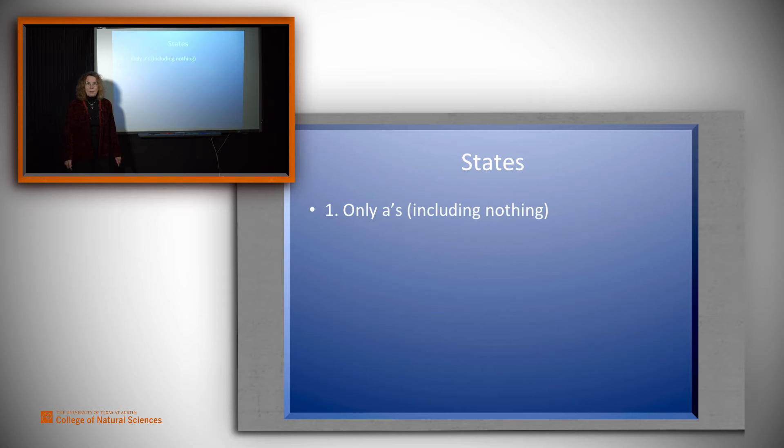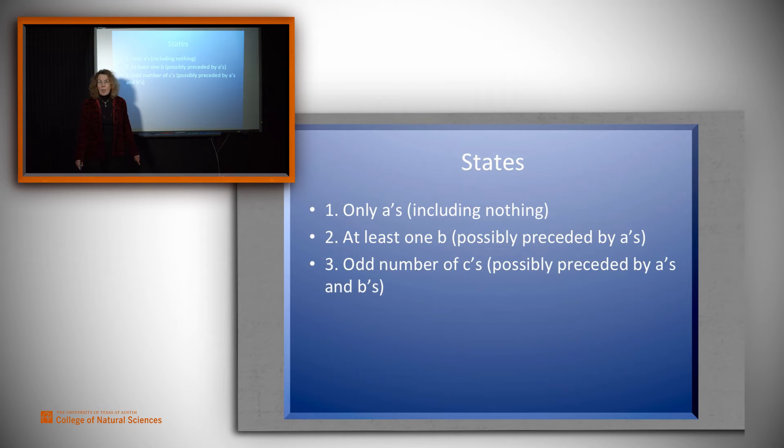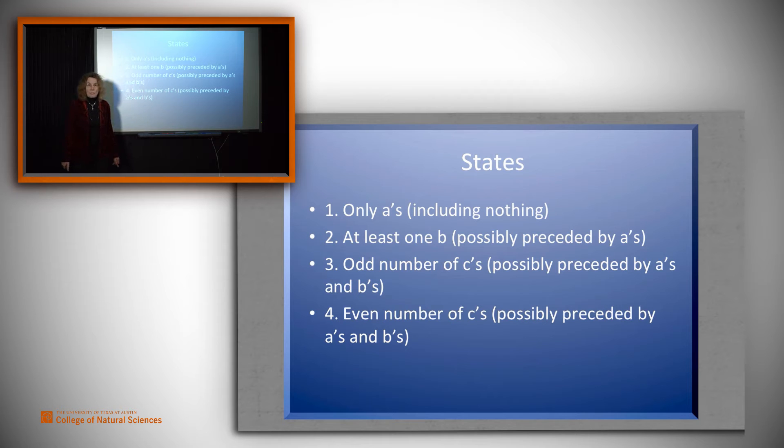Well, let's start with a state that corresponds to only A's so far, possibly nothing, but nothing except A's. We need a state that says we've already seen our first B, and that's important because once that happens, we cannot see any more A's. We need a state that says we've seen our first C, thus no more A's or B's, and the number of C's is odd, which of course it is when we've seen only one. But we need a fourth state to correspond to, and we're seeing C's, but there's been an even number of them.